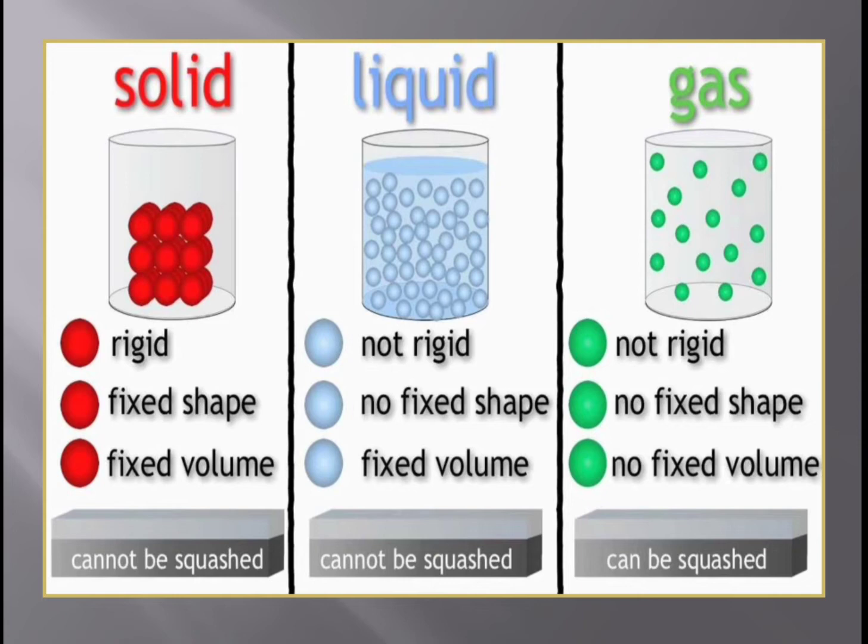For example, tables, chairs, books — anything. These particles are very tightly packed. Because of that we can't press them and they don't flow. They have a solid shape and size.